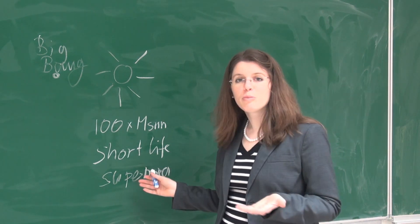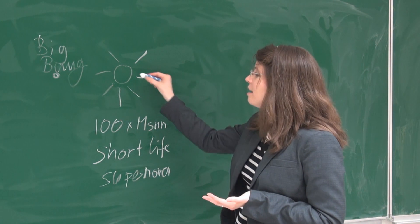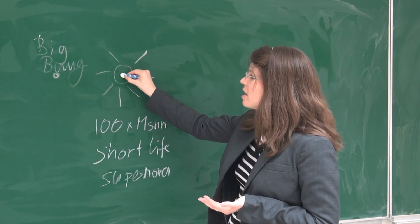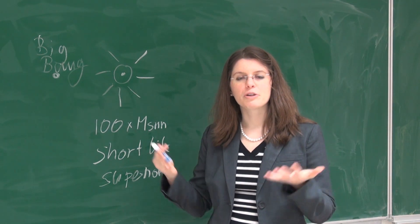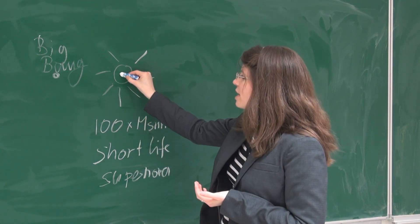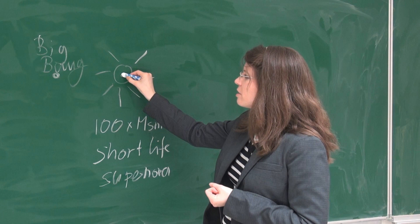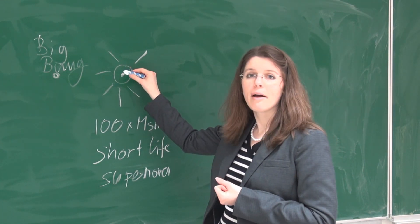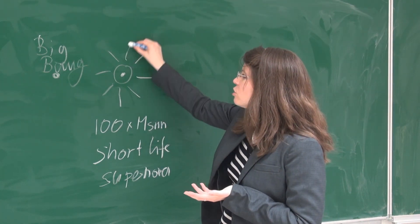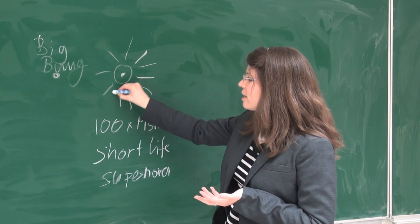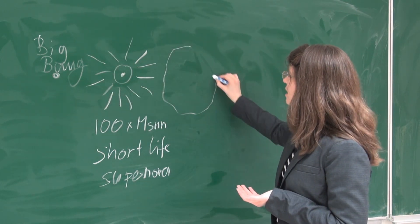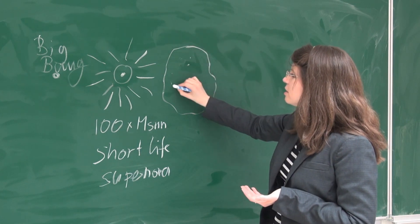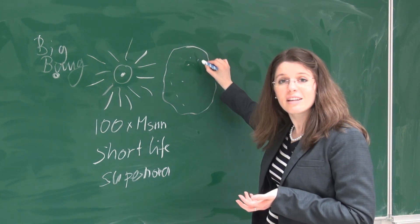What happened in those supernova explosions is that elements heavier than hydrogen and helium—for example, iron and carbon and oxygen—were generated in the core of the star during its lifetime. But in the supernova explosion, all this material got ejected out into space.